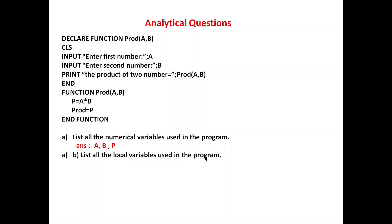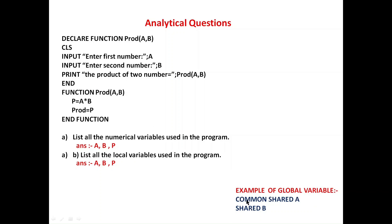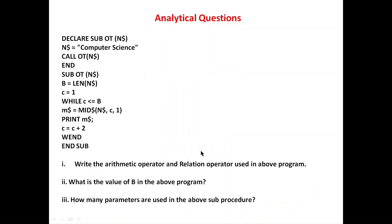List all the local variables used in the program. A local variable is one declared inside the main module or a sub-module. The local variables are A, B, and P. A and B are accessible only in the main module, and P is accessible only inside the function. If we see a statement like COMMON SHARED or SHARED with a variable name, then that is a global variable; all others are local.